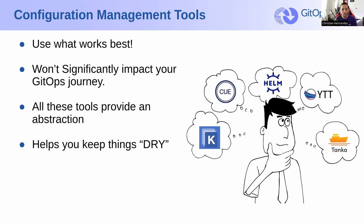For example, Helm and Kustomize both address the need for a standardized set of manifests and the ability to alter them based on the specific environment they will be deployed into. This abstraction is extremely convenient for keeping your manifests DRY — don't repeat yourself. This is why config management tools have gained wide adoption in the GitOps community. You can have a basic set of configurations and then rubber-stamp them out and alter them depending on their destination.